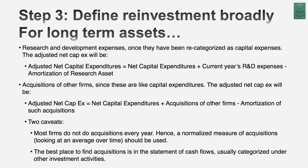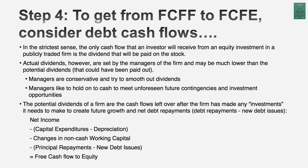For working capital, the accounting definition is current assets minus current liabilities. I modify this: I use non-debt current liabilities, since short-term debt is already part of my cost of capital, and I exclude cash from current assets. Cash is not a wasting asset — most cash is invested in commercial paper or T-bills at a fair market rate. These are slight modifications but they can make a big difference in your final numbers.